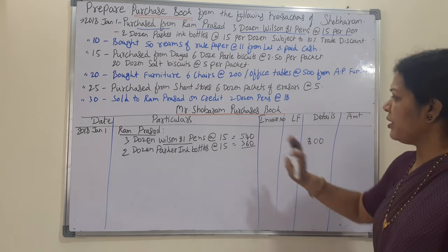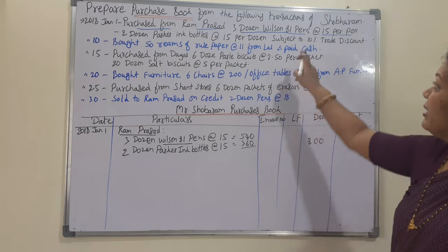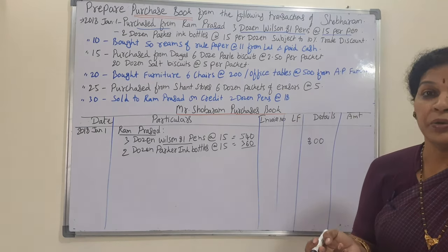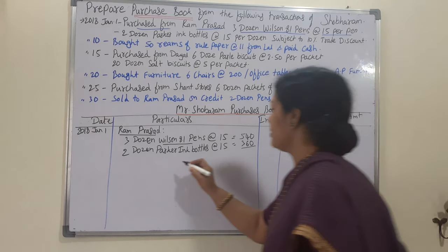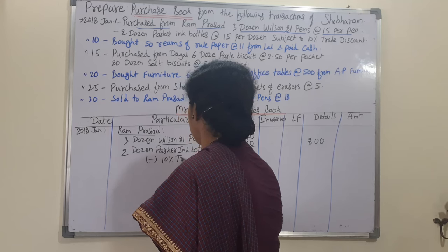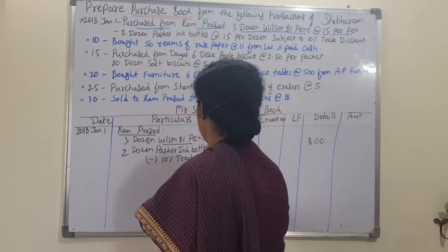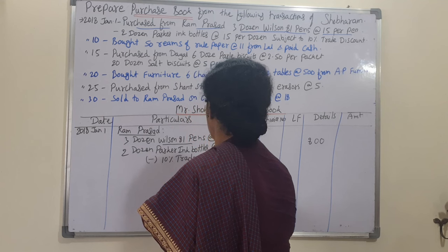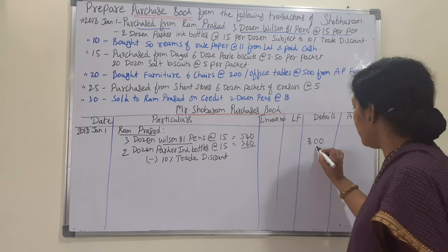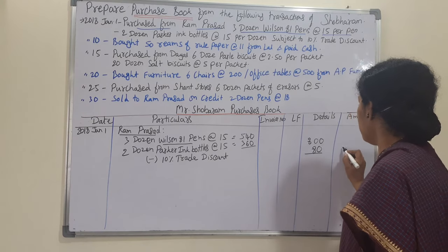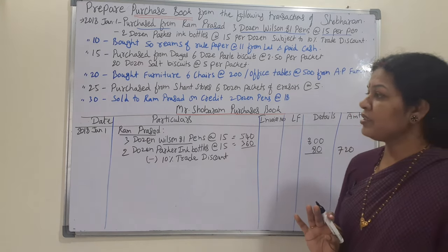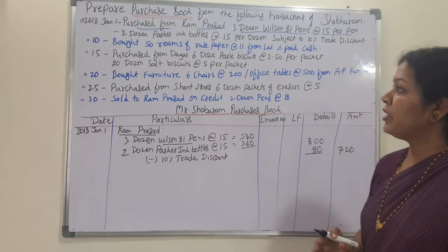The total of pens and ink bottles is 800 rupees. They are saying there is a 10% trade discount, so we deduct it. 10% on 800 comes to 80 rupees, so the net amount is 720 rupees in the outer column. This completes the January 1st entry.